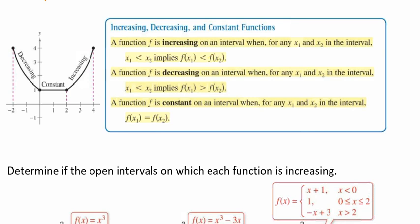The more you know about the graph of a function, the more you know about the function itself. So take a look at this picture. Moving from left to right — this is very important — we notice that this graph falls from x equals negative 2 to 0. Then it's constant, meaning there's no change, from 0 to 2. And then it's going to increase, moving up, from 2 to 4.